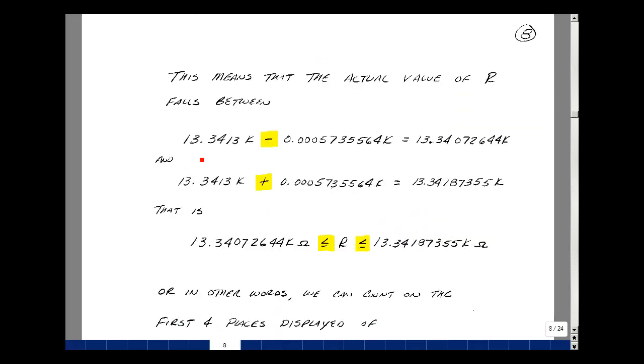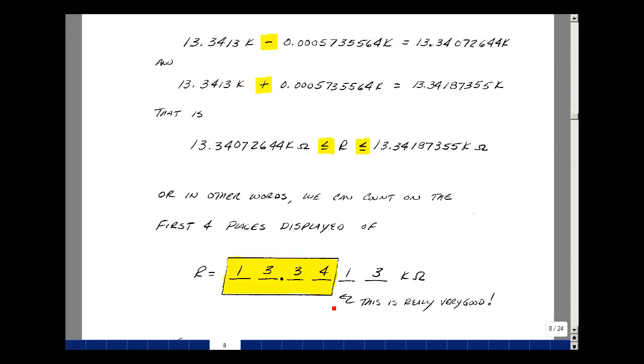Let's take a look at calculating the range in our reading. So we measured 13.3413k, but what this is saying is that there is a range around that value. And we're going to subtract and add that number we had on the last page. And so our actual value of resistance is between this number and this number.